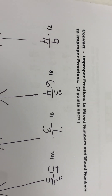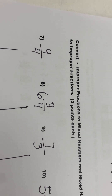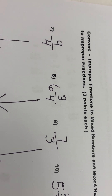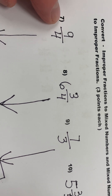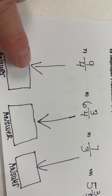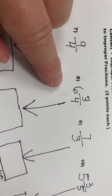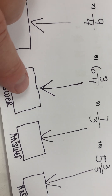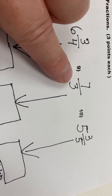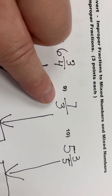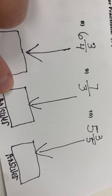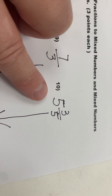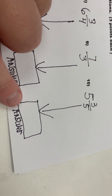The last question on the test says convert improper fractions to mixed numbers and mixed numbers to improper fractions. Number seven: you have 9 fourths — that is an improper fraction, change it to a mixed number. Number eight: you have 6 and 3 fourths — that's a mixed number, change it to an improper fraction. Number nine: you have 7 thirds, change that to a mixed number. And number ten: 5 and 3 fifths — that is a mixed number, change it to an improper fraction.